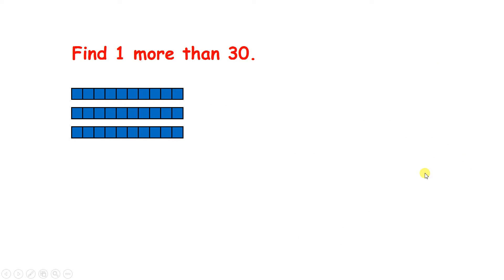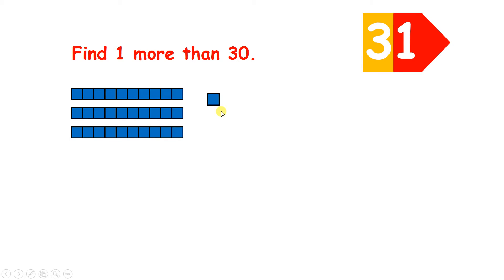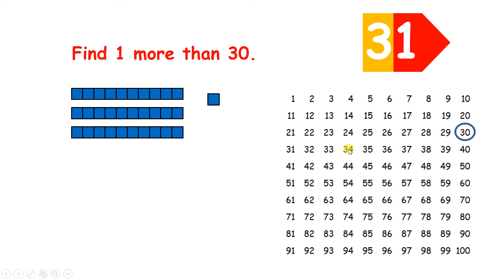One more than 30 — so we have 3 tens. If we add a unit, then we've got 31: 3 tens and 1 unit. Now on the 100 square, just like when you're reading pages of a book, when you get to the end of a line, you go to the beginning of the next line. So one more than 30 is 31.